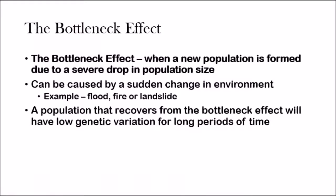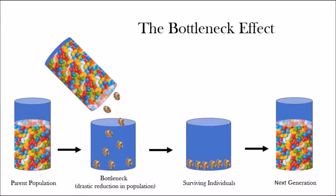The second type of genetic drift is the bottleneck effect. The bottleneck effect is when a new population is formed due to a severe drop in population size. Basically, a catastrophic event happens — like a flood, a fire, or a landslide — and you have a large population where a catastrophic event causes only a few of them to survive. This drastic reduction in the population is called the bottleneck.